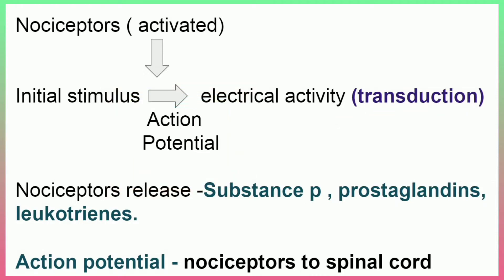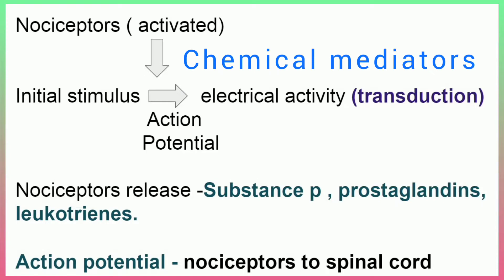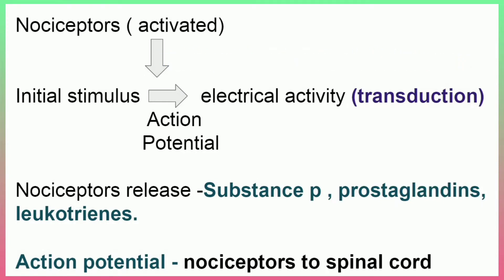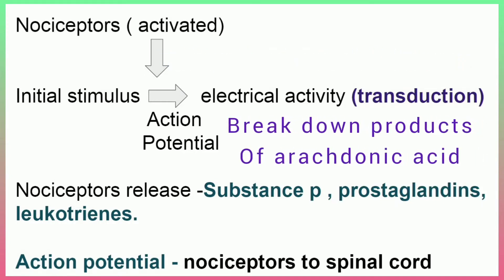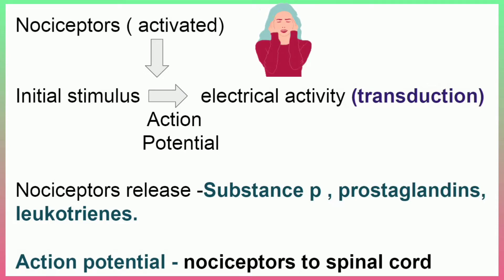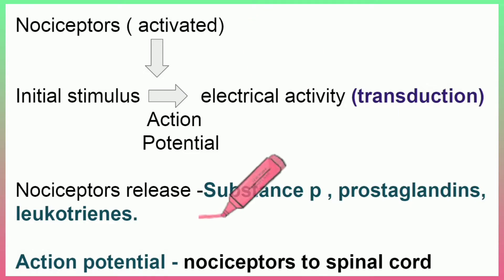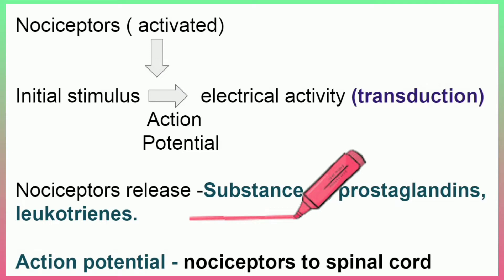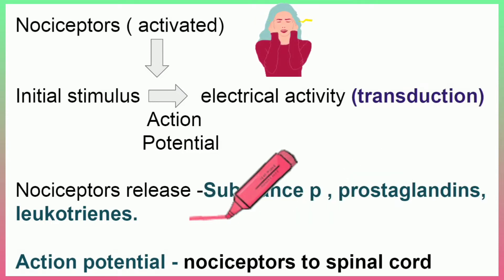In this case, the nociceptor is activated by another mechanism — it is released by chemical mediators. For example, substance P and breakdown products of arachidonic acid, called prostaglandins and leukotrienes. These are chemical mediators released during painful tissue events, and pain impulses can also be transmitted by these chemical mediators.